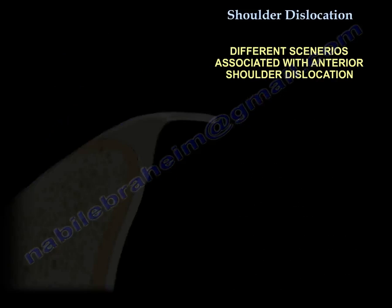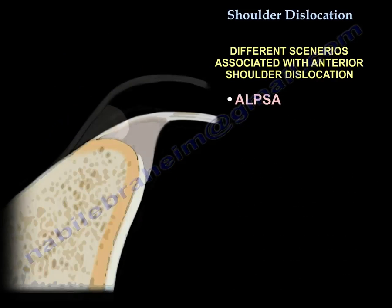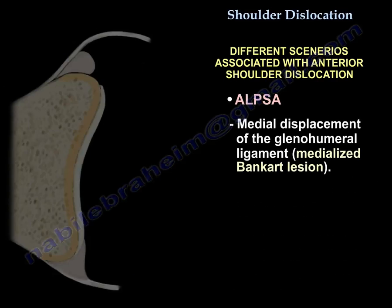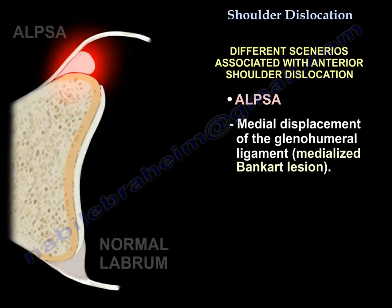How about ALPSA? ALPSA is medial displacement of the inferior glenohumeral ligament. It is also called a medialized Bankart.